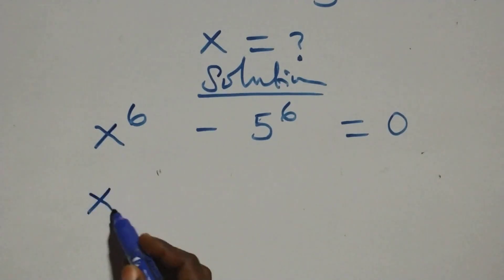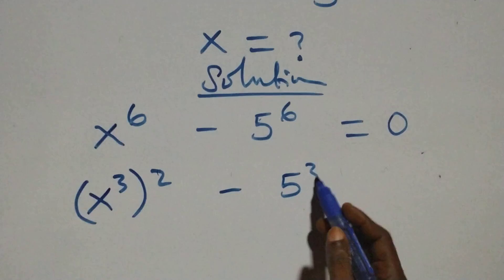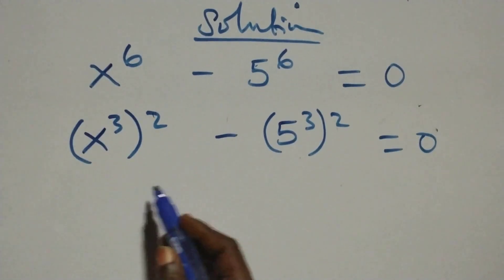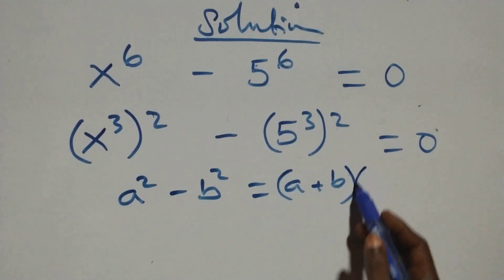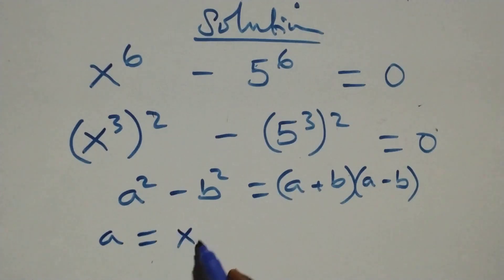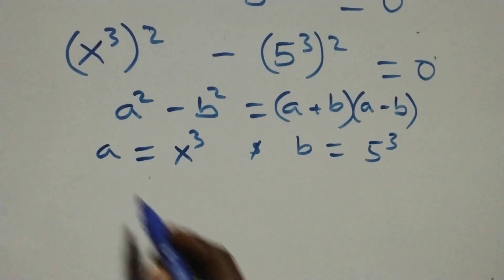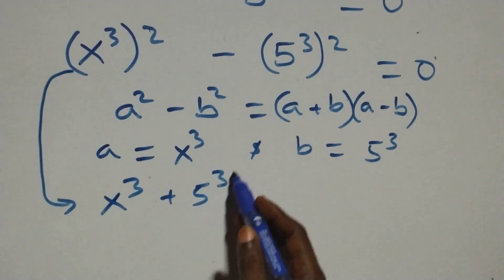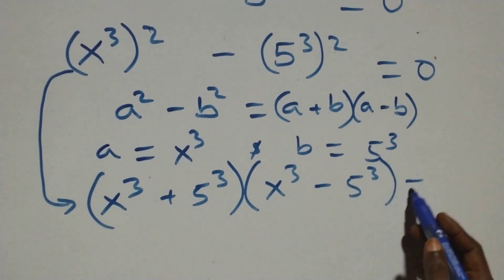We can rewrite this as x raised to power 3, raised to power 2, minus 5 raised to power 3, raised to power 2, equals to 0. This follows the form a squared minus b squared, which factors as a plus b into bracket times a minus b, where a stands as x raised to power 3 and b stands as 5 raised to power 3.